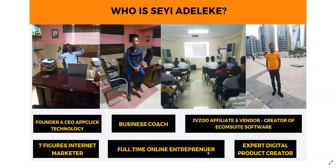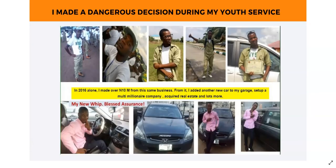No single month goes without banking seven figures. I'm an expert digital product creator — I've created a lot of digital products in different niches and these are products that solve real-time problems. I made my first million in my early 20s and have been scaling up ever since. During my youth service I made a dangerous decision: I will never work for anybody. In 2016 alone I made over 10 millionaires from this same online business.